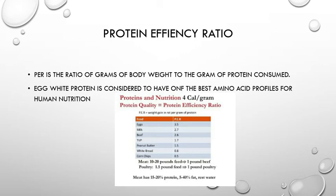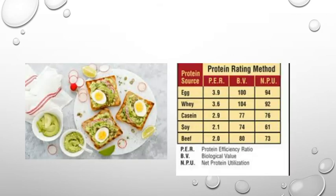To clarify: egg PER is 3.5, milk is 2.7. PER is the ratio of gram of body weight gained to the gram of protein consumed.